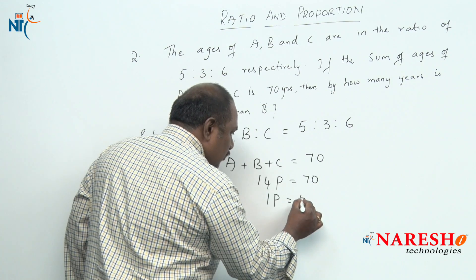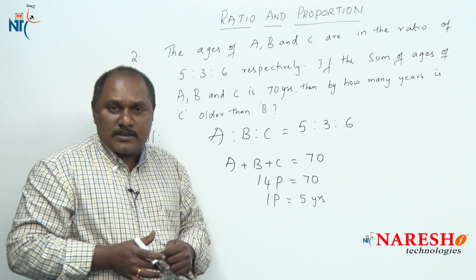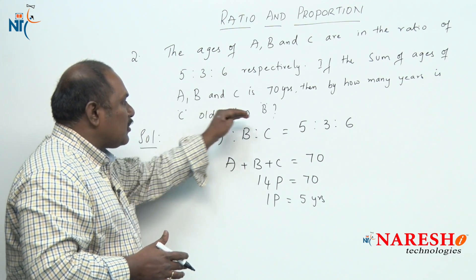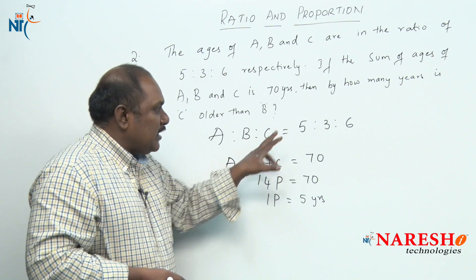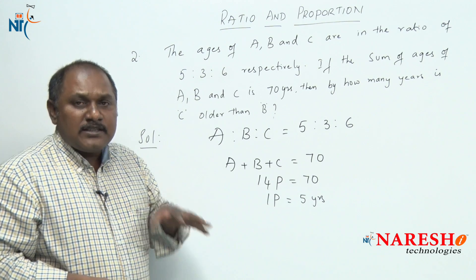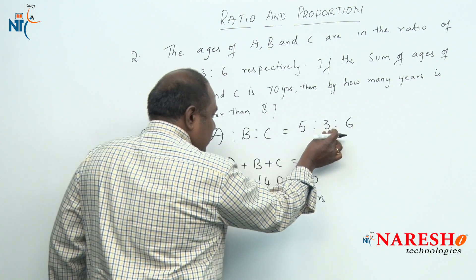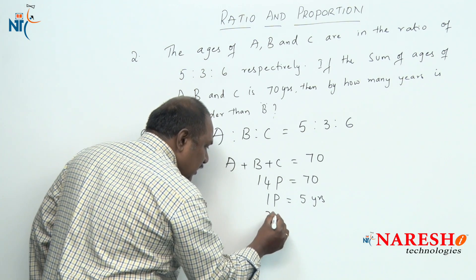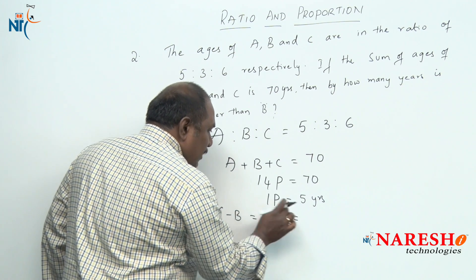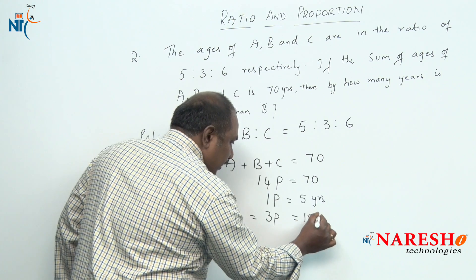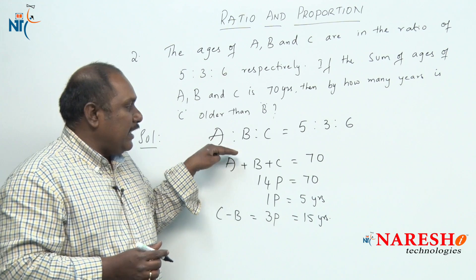To answer the question, we need not find the actual ages of B and C separately. We know B is 3 parts and C is 6 parts, so C is older than B by 3 parts. Since 1 part is 5 years, 3 parts is 15 years. This is how we solve the problem simply without actually finding the individual ages of A, B, and C.